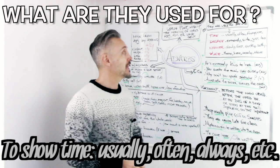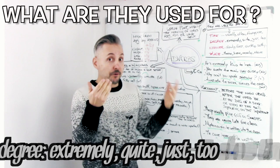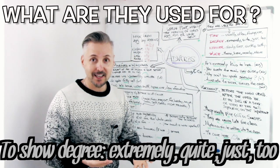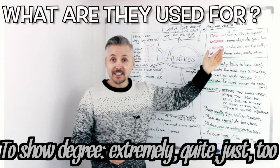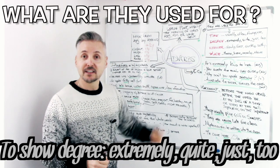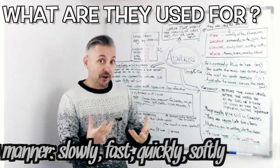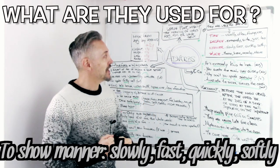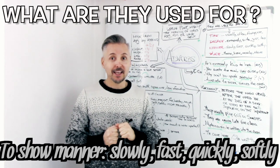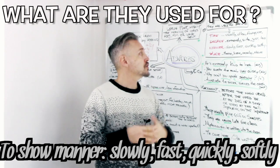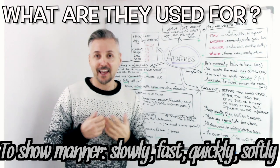They can show degree, so adverbs of degree, which are extremely, quite, just, too. They can show manner, so adverbs of manner: slowly, fast, quickly, softly, etc.